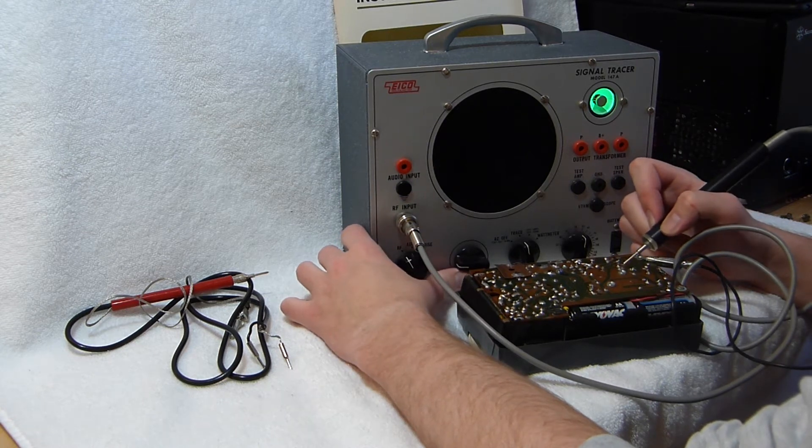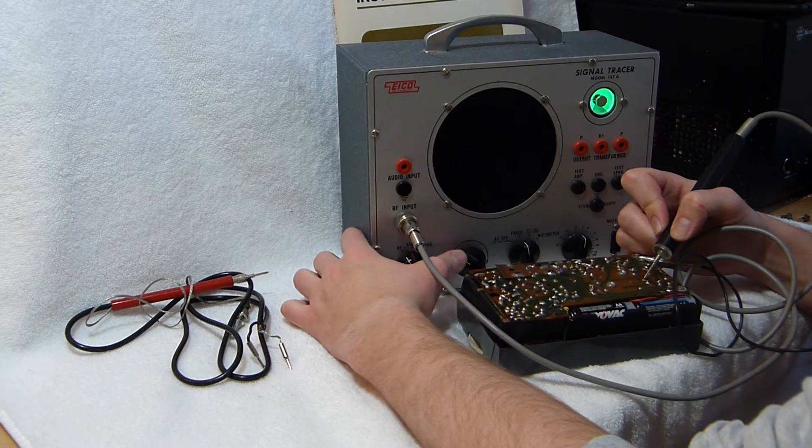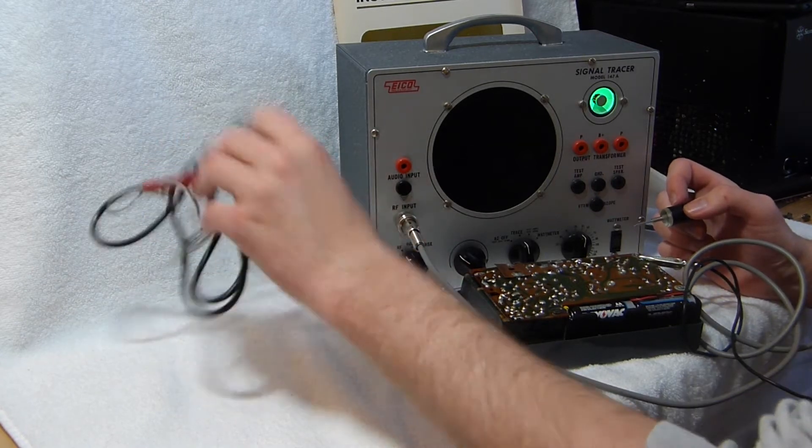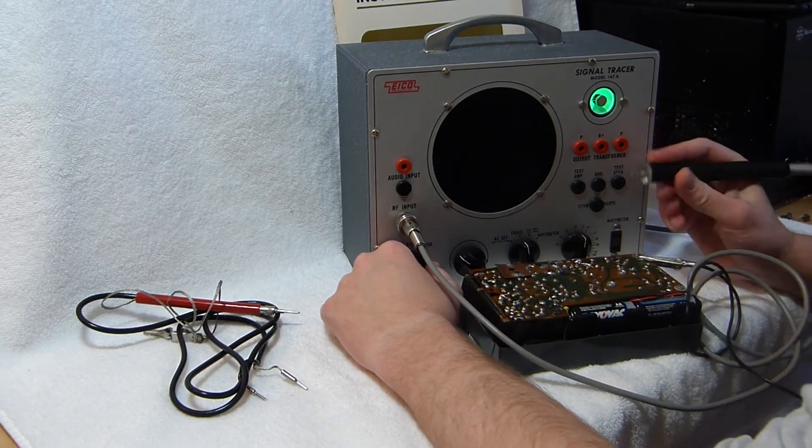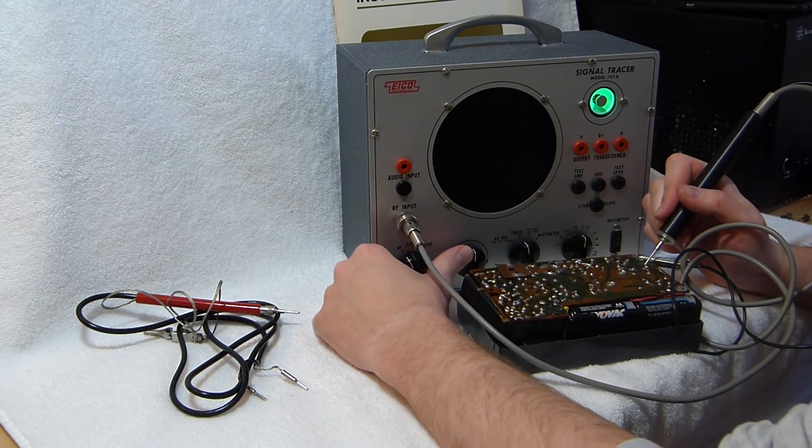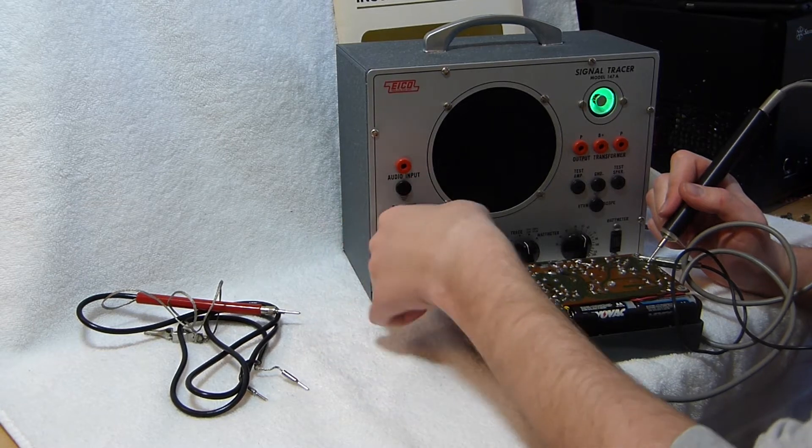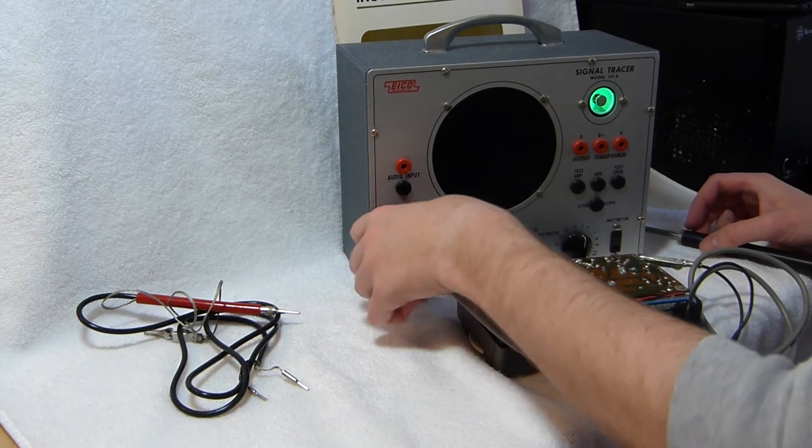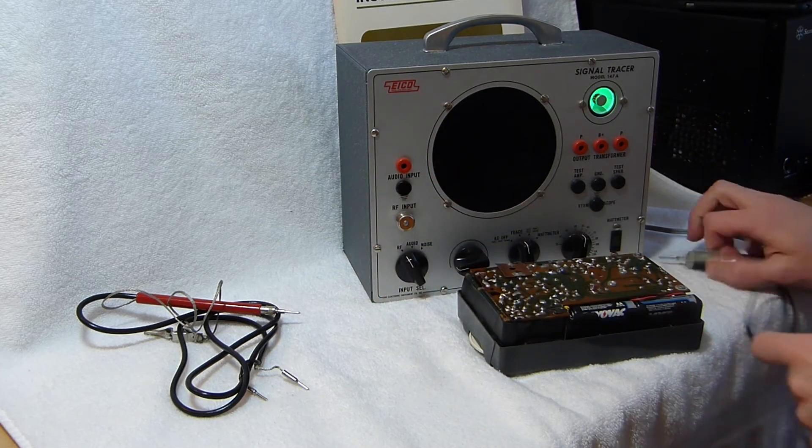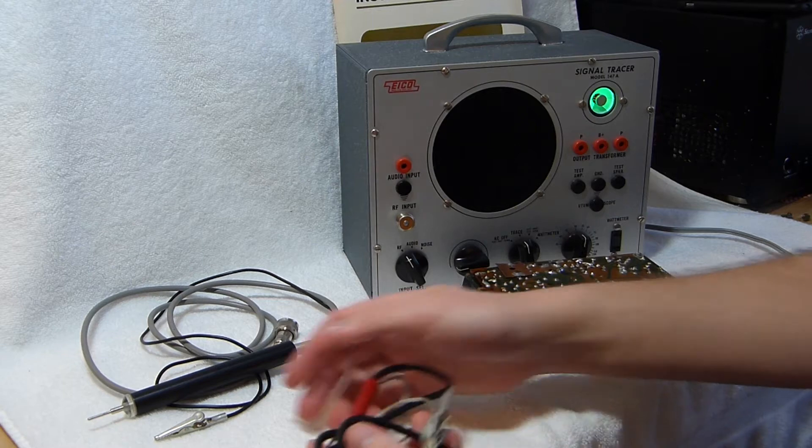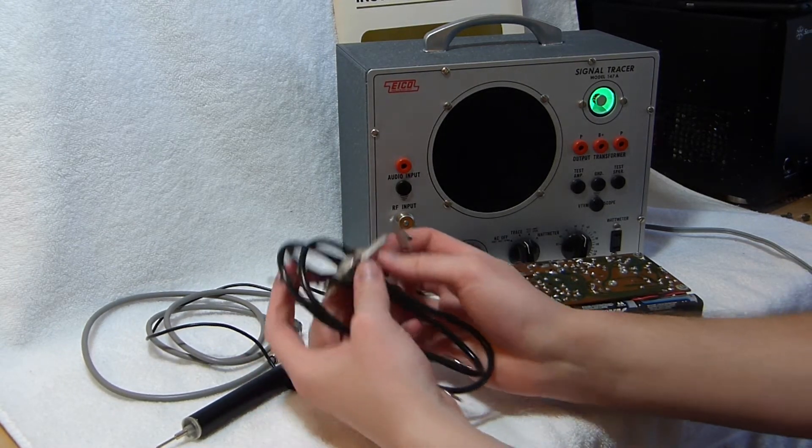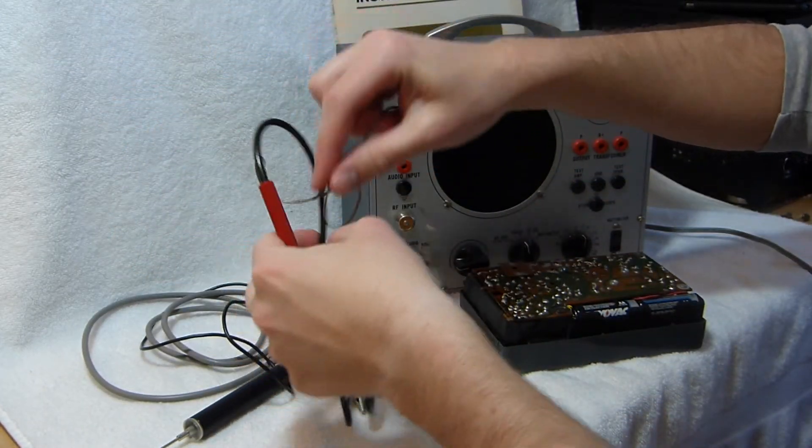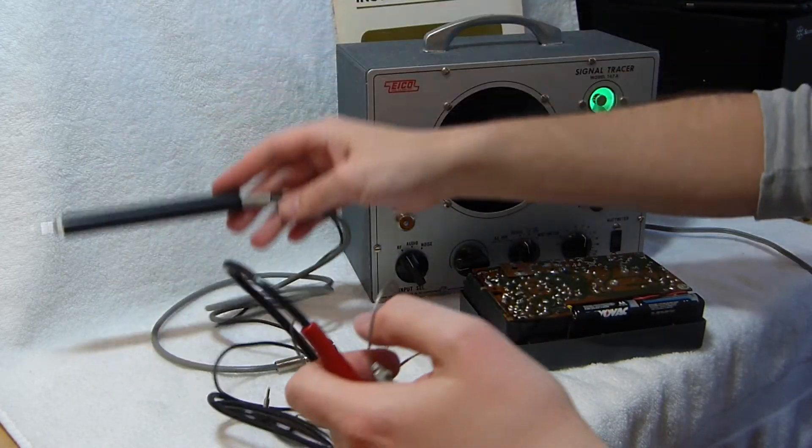This is the audio section over here. You don't really need the AF probe. You can probe the AF sections just fine with the RF probe. I think that's the output transformer connection right there. I will show you the AF probe though. For some reason it's constructed significantly differently from the RF probe. I don't know why they put this bare wire on there, but that's apparently how it was.